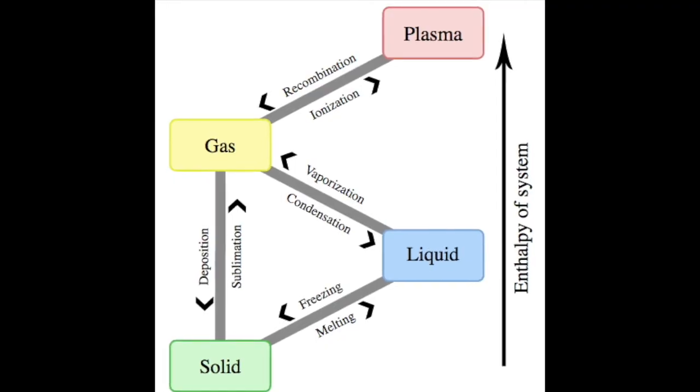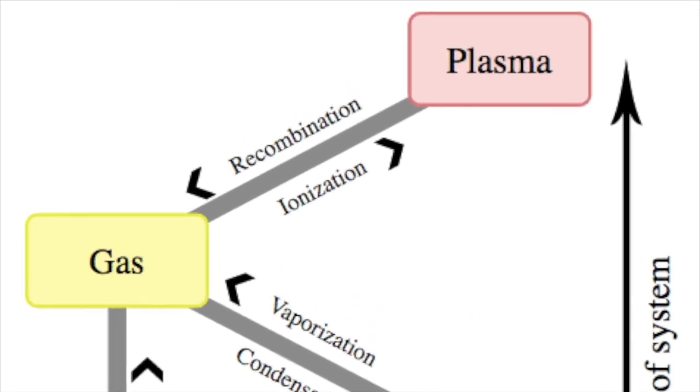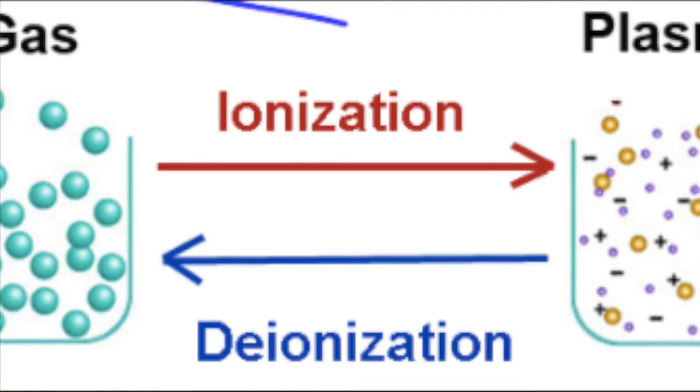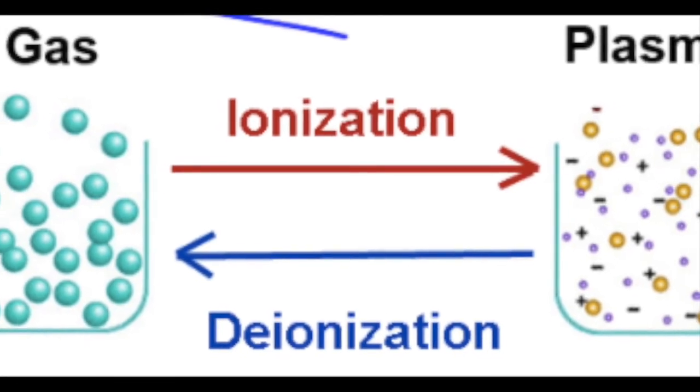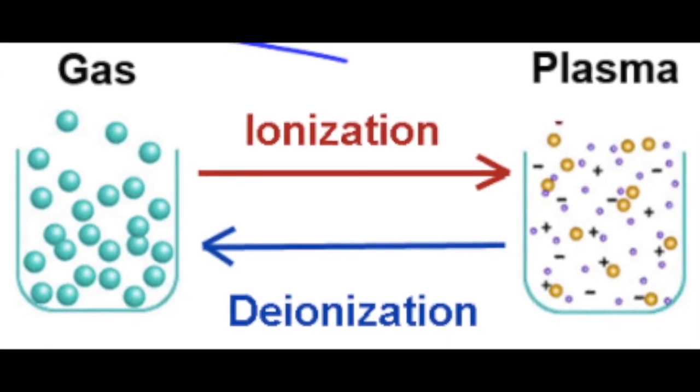Okay, so what about plasma turning into gas? Well that's deionization. It's also known as recombination. It's the reverse of ionization when plasma then changes into a gas. So you've got to cool things way down.